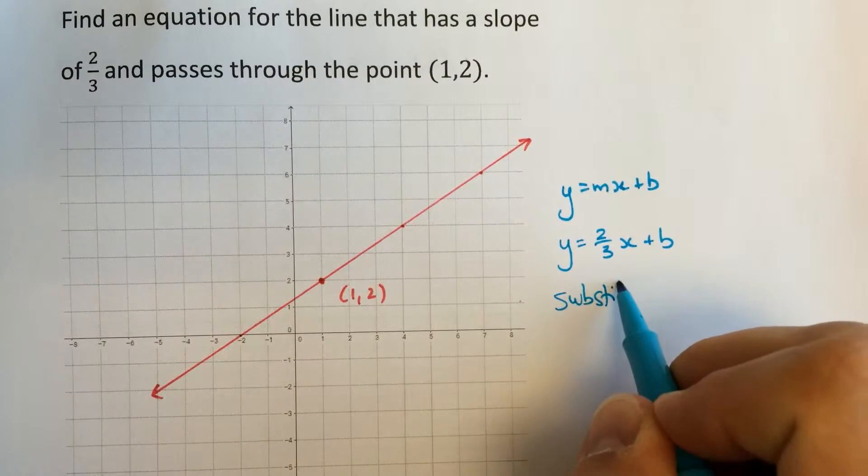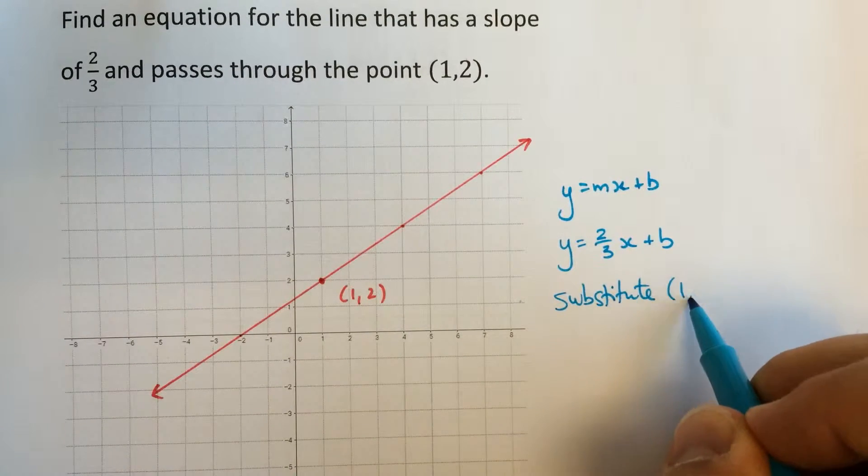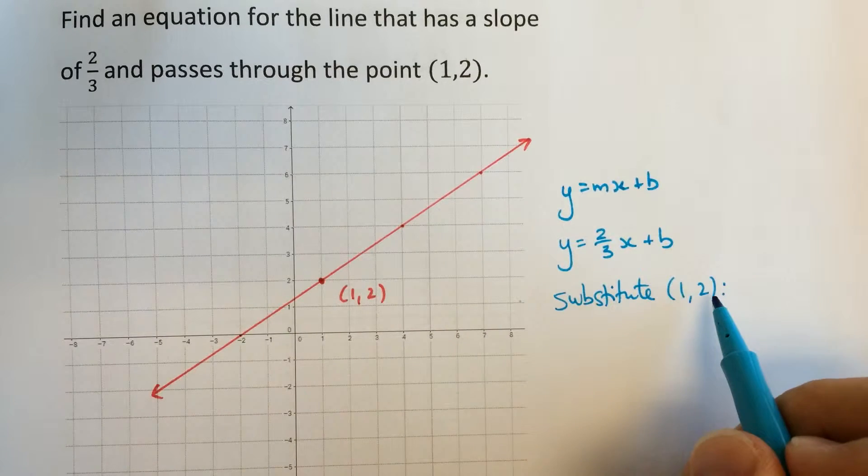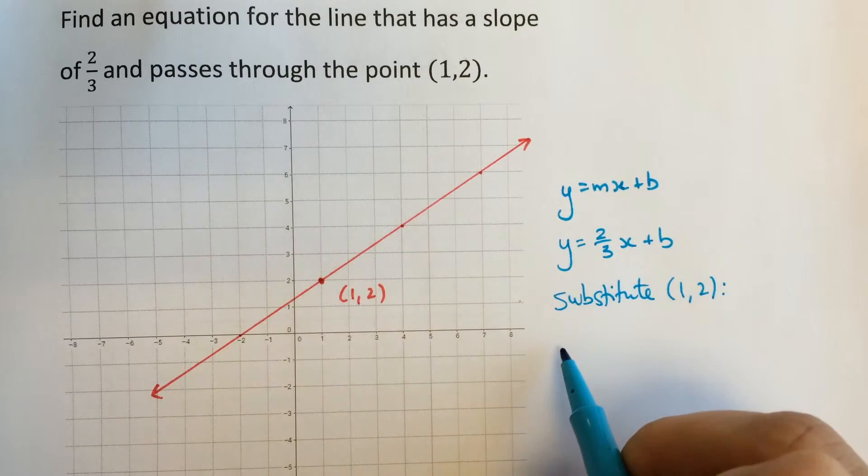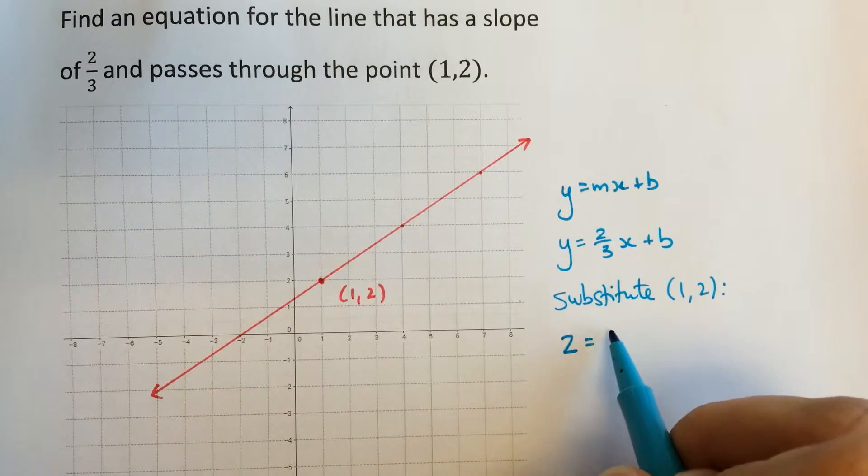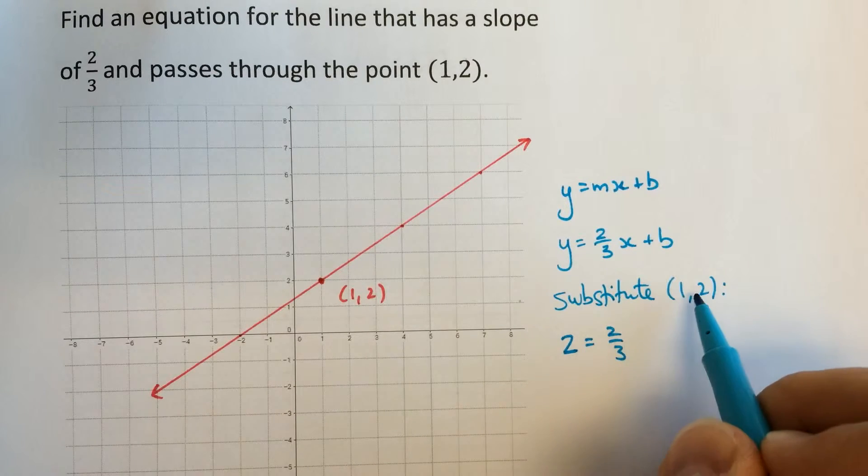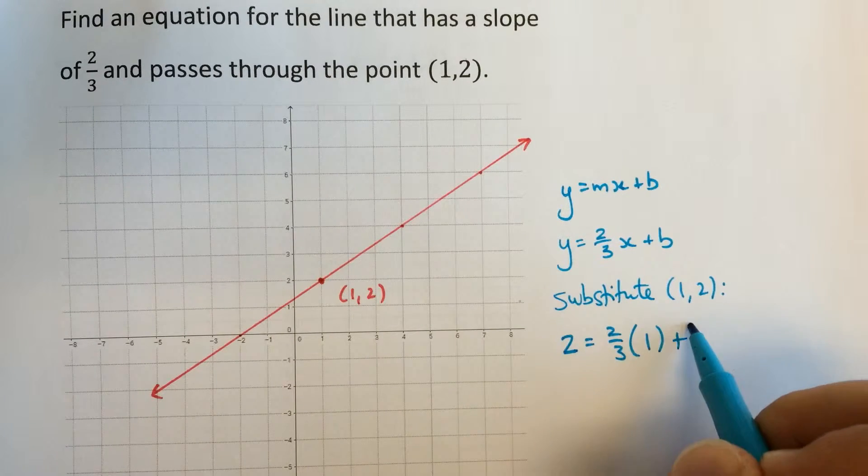So we'll substitute the point (1,2). Now being careful, the y value is two. So substituting that here, two equals two-thirds of x, which is one, plus b.